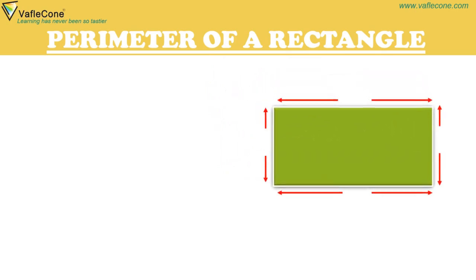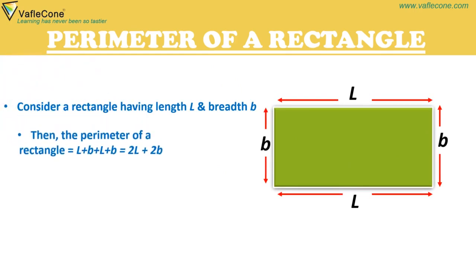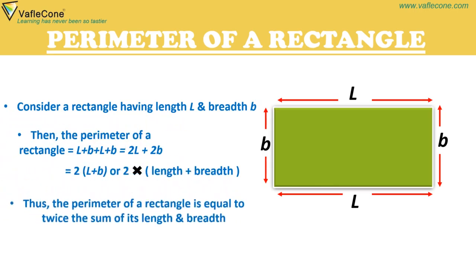Perimeter of a rectangle: Consider a rectangle having length L and breadth B. Then the perimeter of a rectangle is equal to L plus B plus L plus B, which equals 2L plus 2B, or 2 into (length plus breadth). Thus the perimeter of a rectangle is equal to twice the sum of its length and breadth.